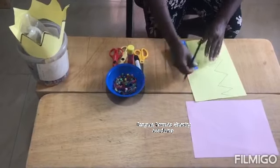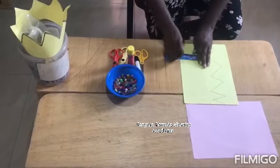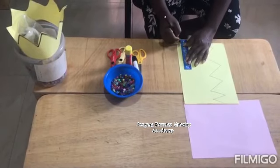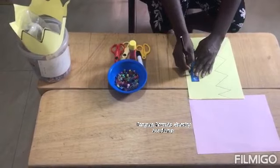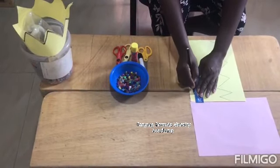On your paper, you draw the lines like this. Next, you take your ruler, make a straight line.